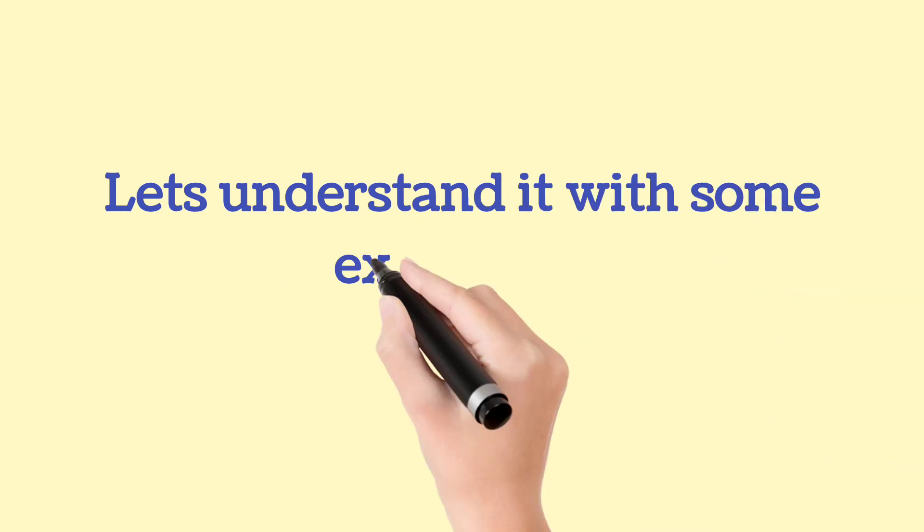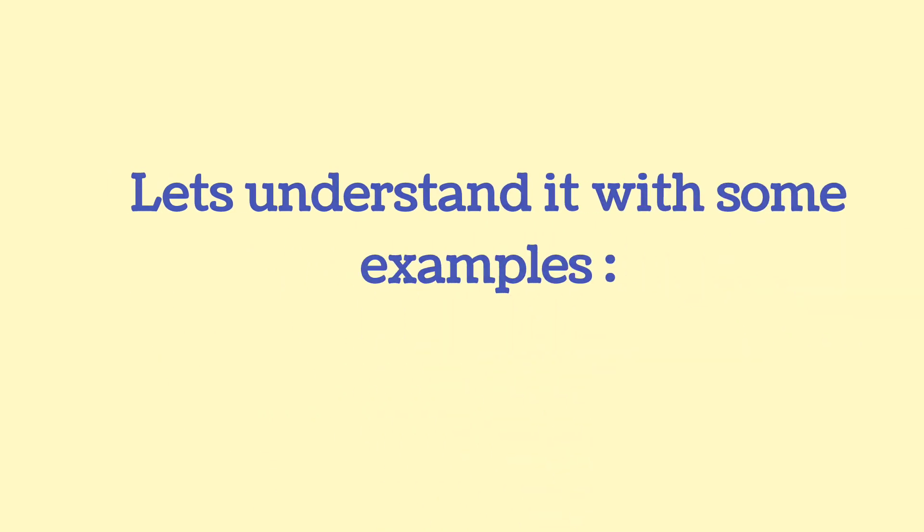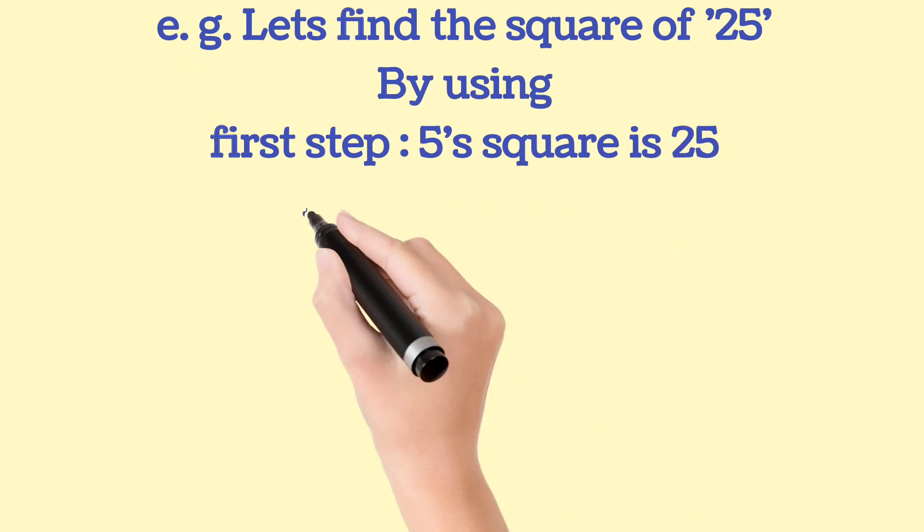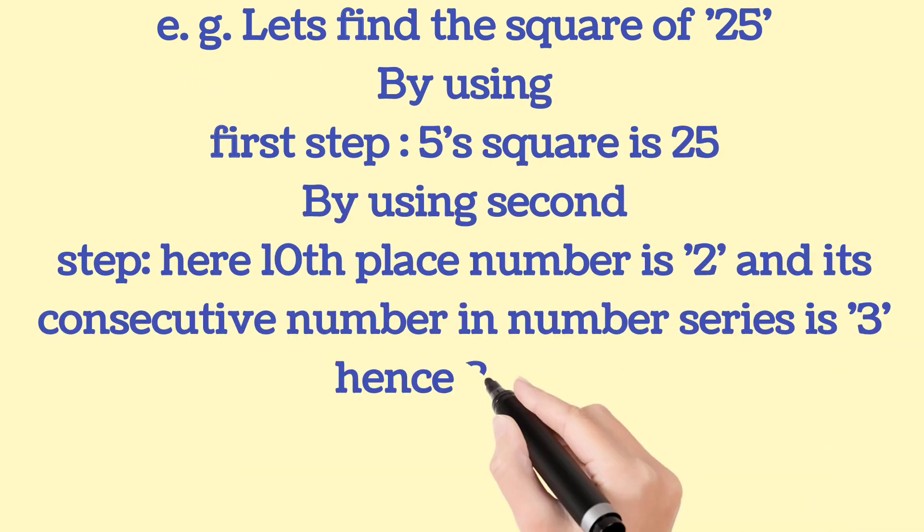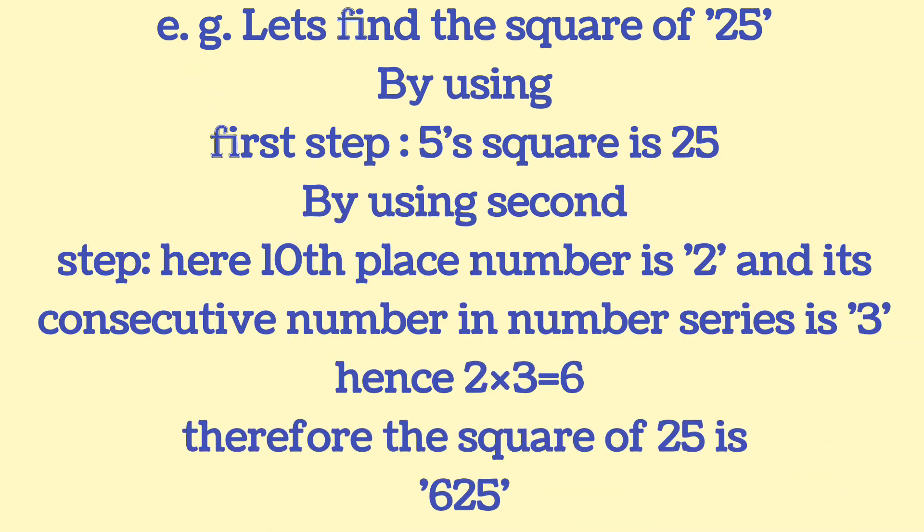Let's understand it with some examples. For example, let's find the square of 25. By using first step, 5 square is 25. By using second step,